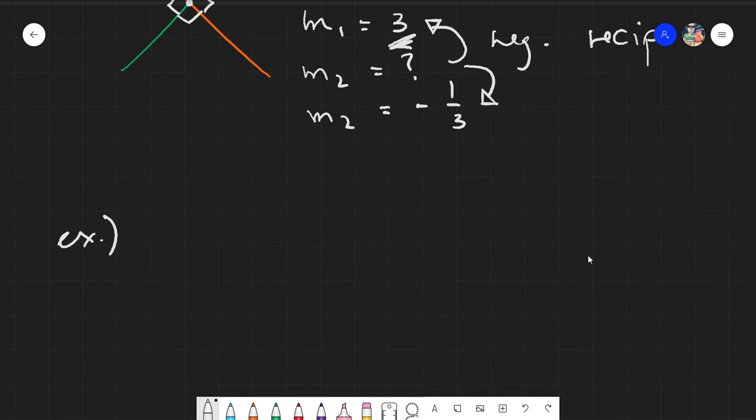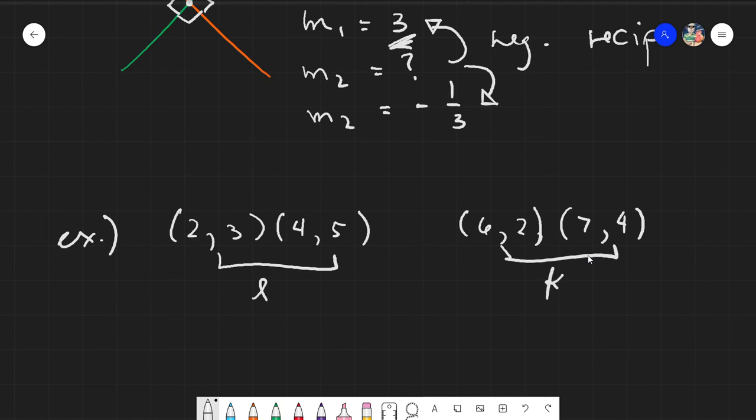And another thing is if you are given, say, four points, like two and three, four and five, and six and two, and seven and four, you will be asked, so if you plot these four points and create two lines, this is your line L and this is your line K, you will be asked, are they parallel or are they perpendicular? And how do you find that? By simply finding the slope.